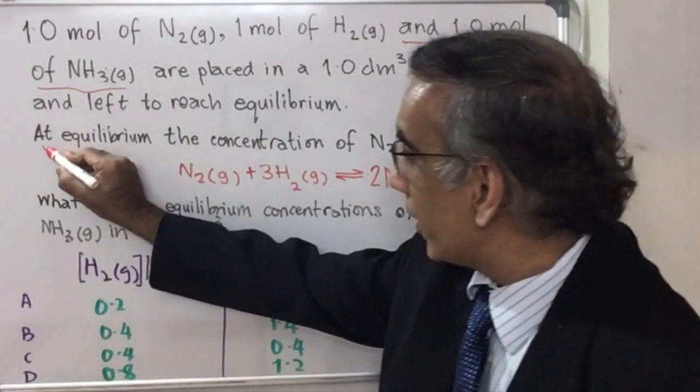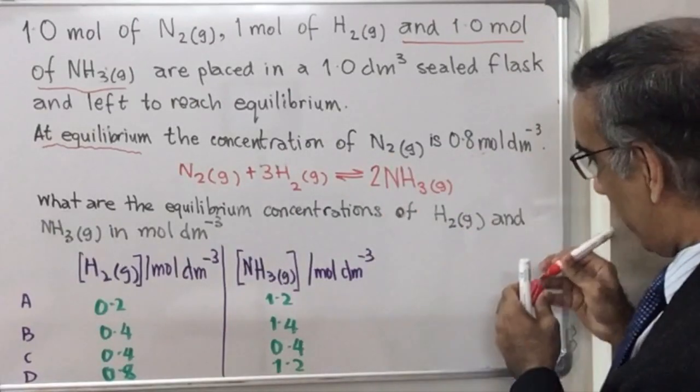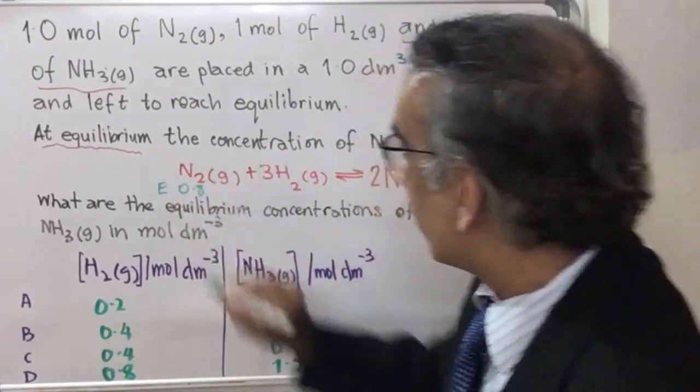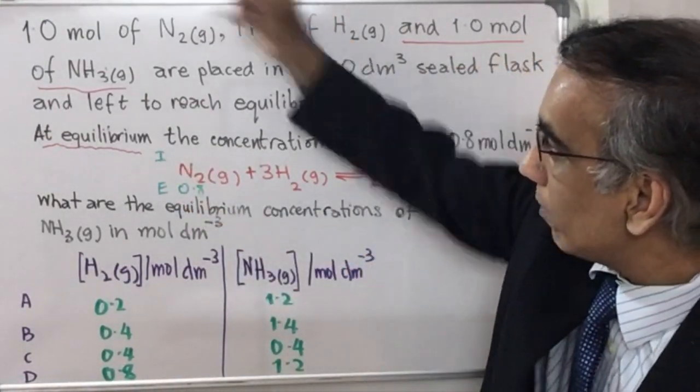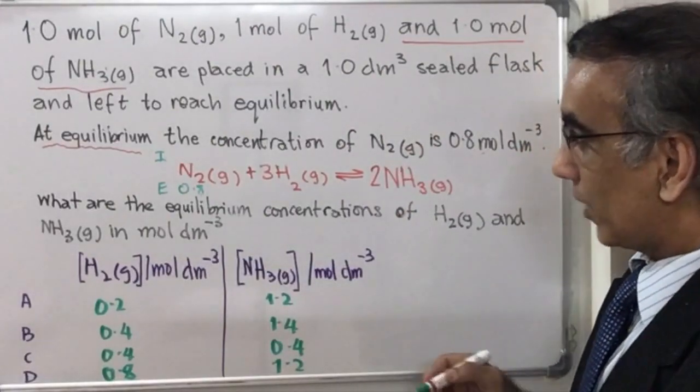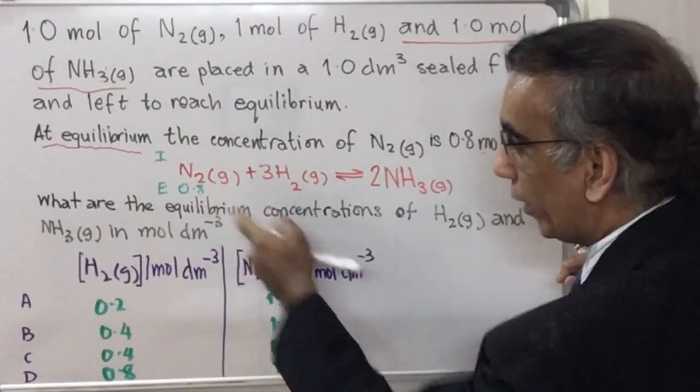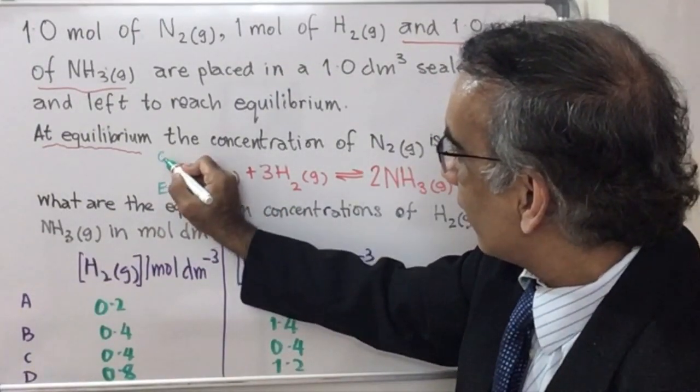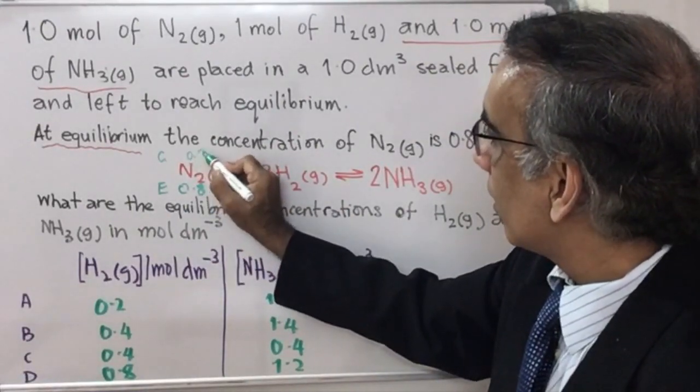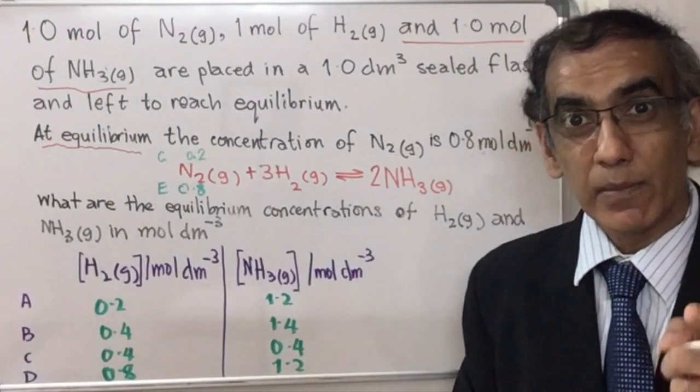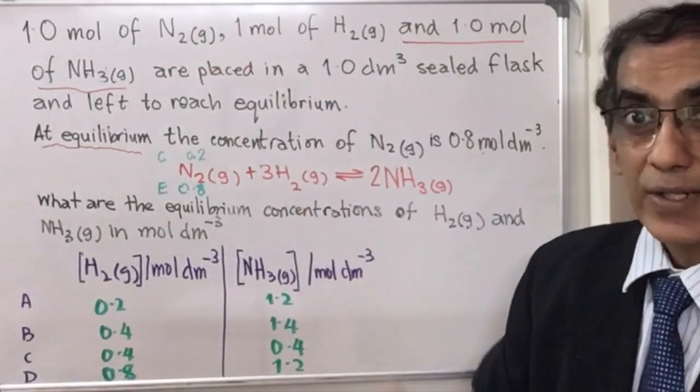Then, at equilibrium, the concentration of nitrogen is now 0.8. That's it. Equilibrium you have that. But initially, you had one mole of nitrogen. That's what you had initially. Therefore, if at equilibrium you had 0.8, then that change is 0.2. And that change is important because that change is the amount of nitrogen that actually reacted.